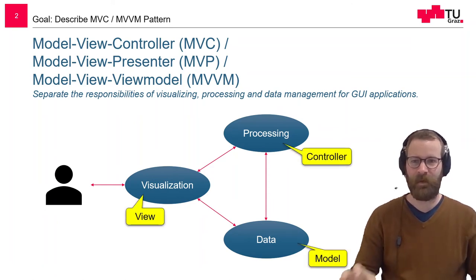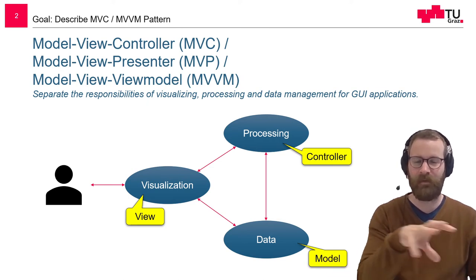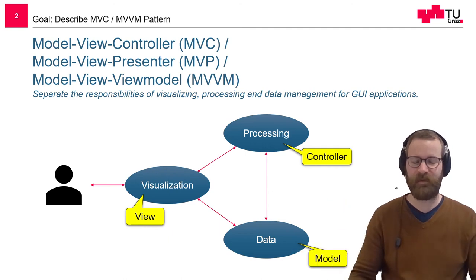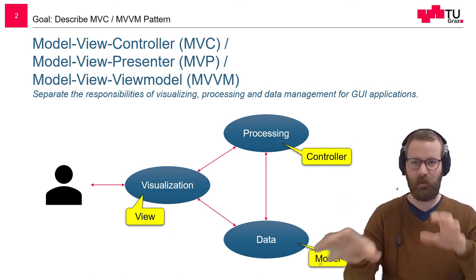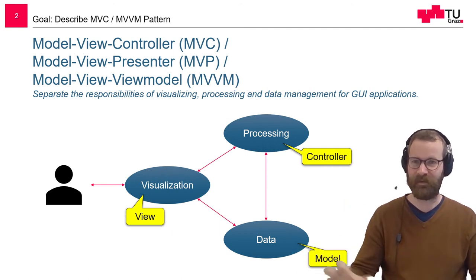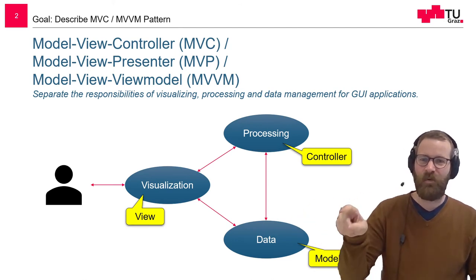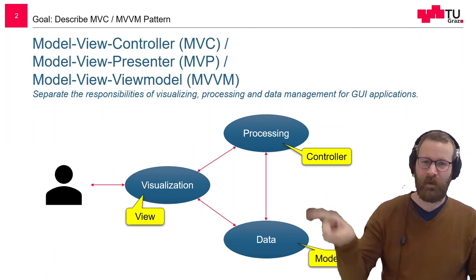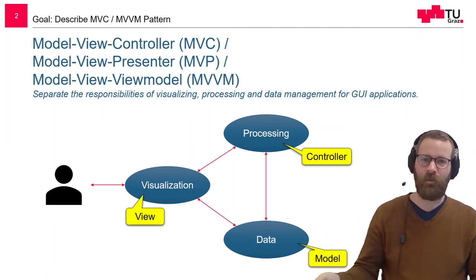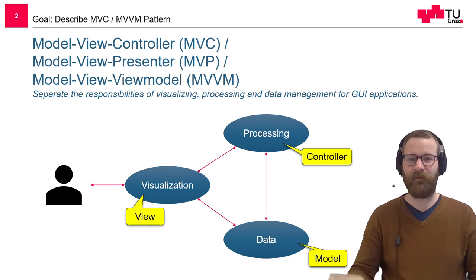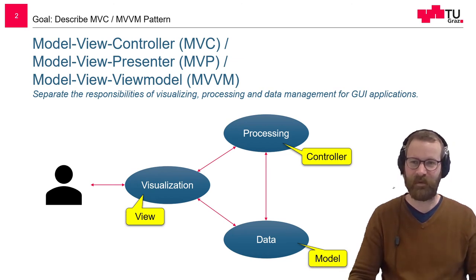So we have a dedicated view, we have a dedicated model, and a controller. And this distribution of roles is important in these patterns. Of course, there are slight differences — who communicates with whom, who controls whom, and so on. But we will talk about this when we come to this separate lecture.